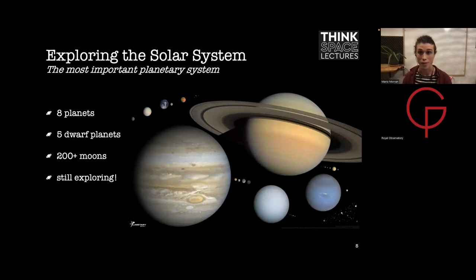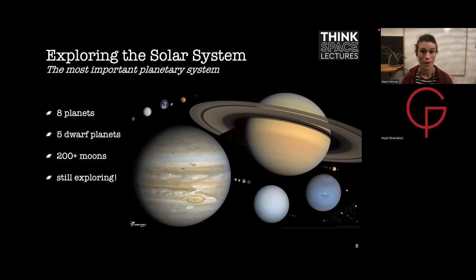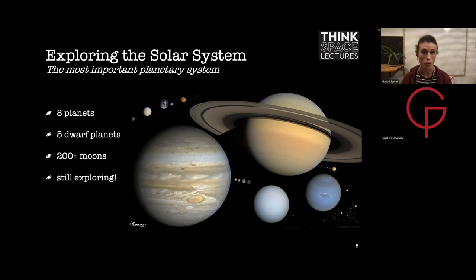Since planets orbit stars, we talk of planetary systems to refer to a star along with the planetary objects orbiting it. The solar system is by far the planetary system we know best, and arguably the most important, because we happen to be living in it. It has eight planets, five dwarf planets, more than 200 moons, asteroids and comets. We are still discovering new objects in the solar system, and for a long time this was the only planetary system that we knew.